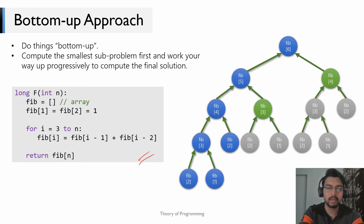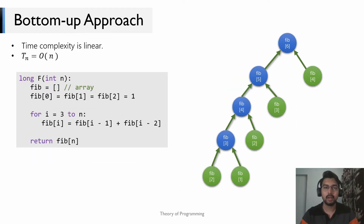This is the code for computing the nth Fibonacci number using the bottom-up approach. We use a simple array to store solutions to sub-problems. When i equals 3, we compute the third Fibonacci number; when i equals 4 we use that to compute the fourth, and so on. This also has linear time complexity — the loop runs from 3 to n (O(n) time) with constant work inside.